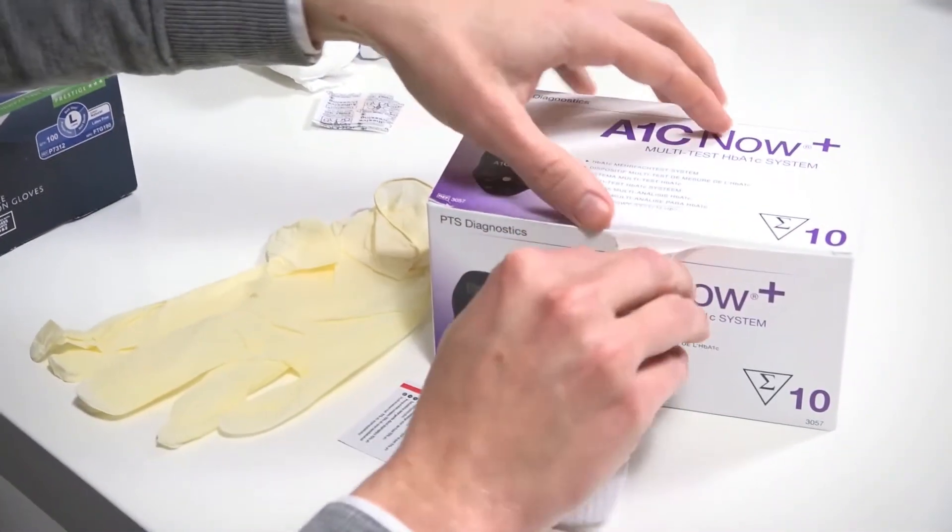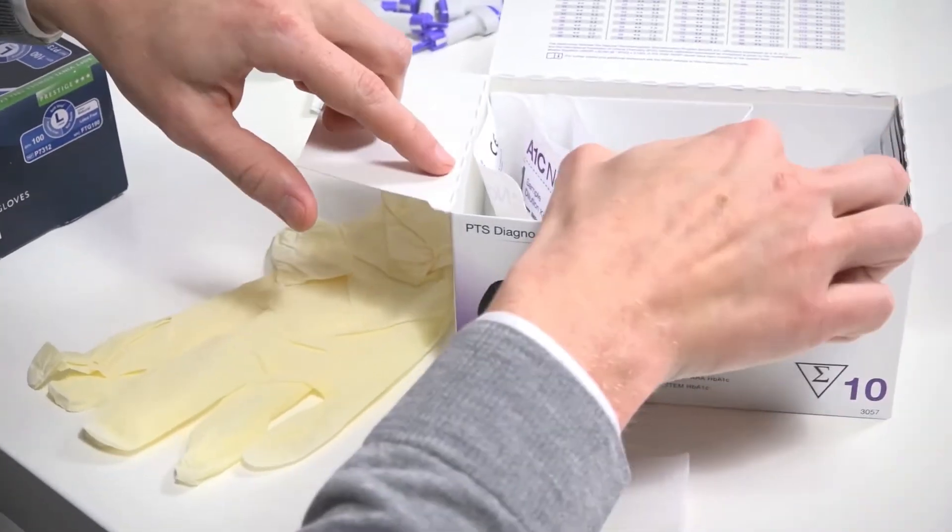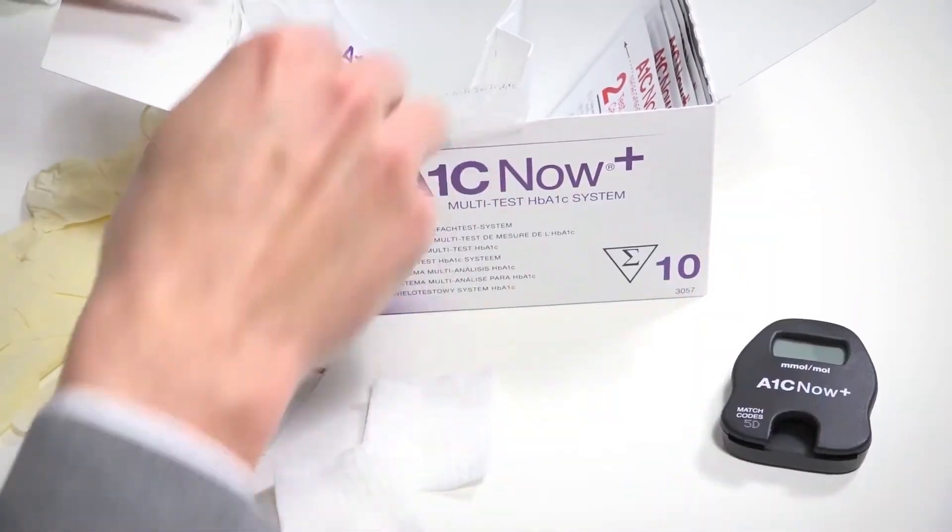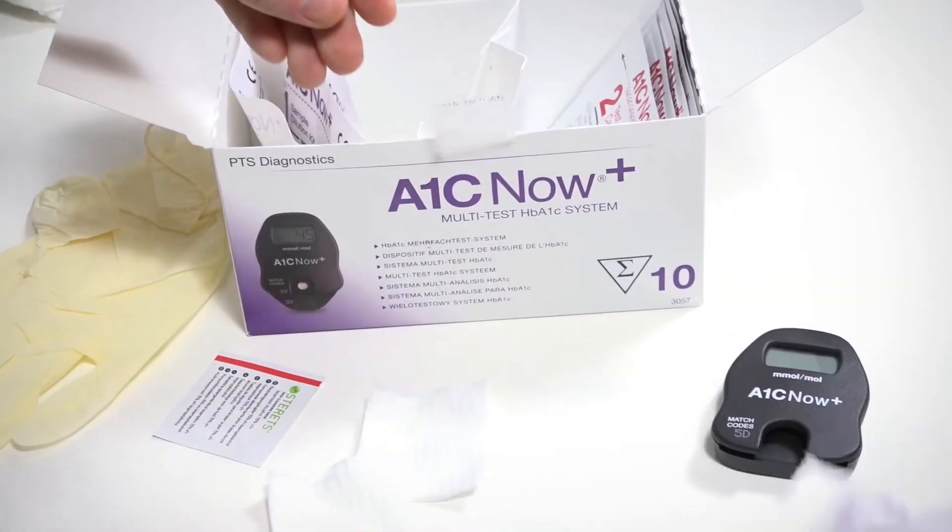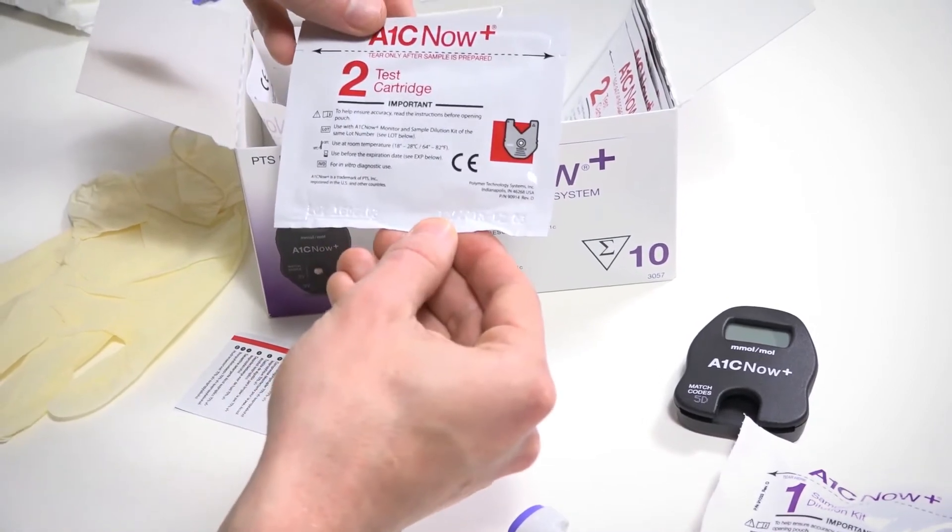From the box you will need the analyzer, pouch number one, and pouch number two.